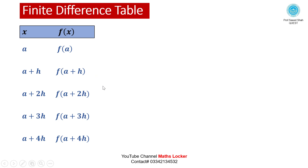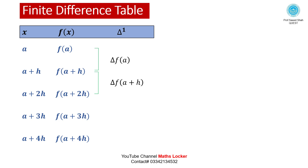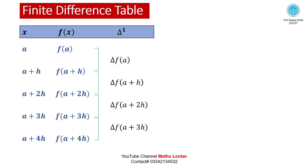With five points, five minus one means we take four differences. The first difference: delta f(a) = f(a+h) minus f(a). Then delta f(a+h) = f(a+2h) minus f(a+h), delta f(a+2h) = f(a+3h) minus f(a+2h), and delta f(a+3h) = f(a+4h) minus f(a+3h).